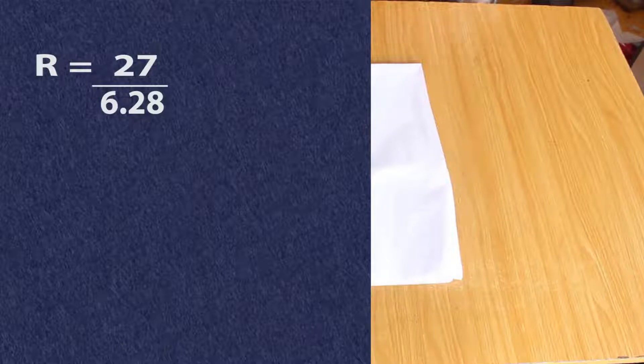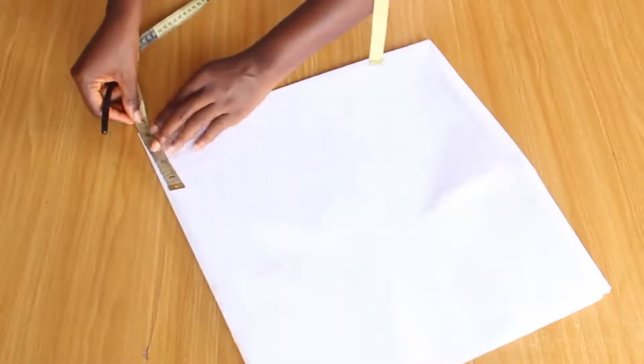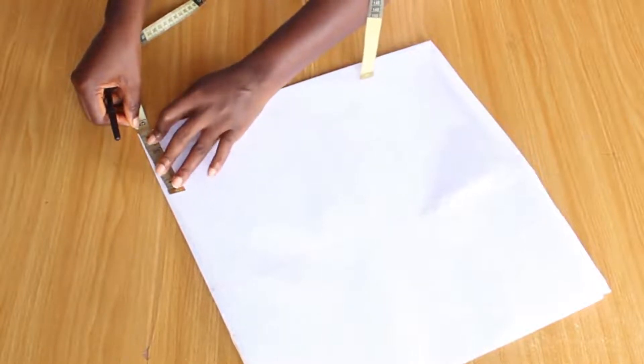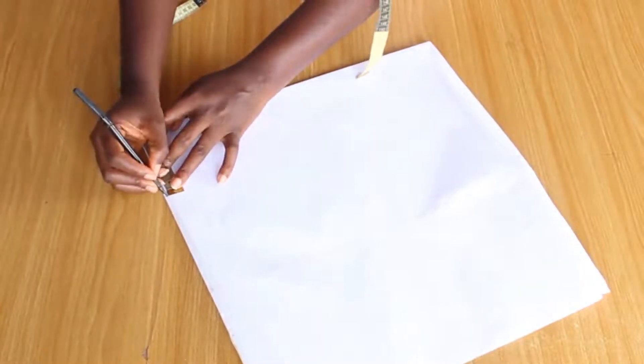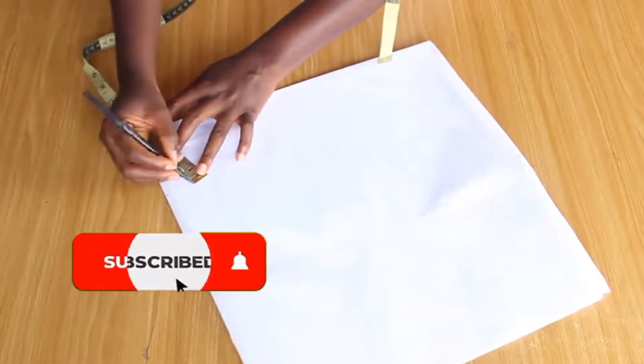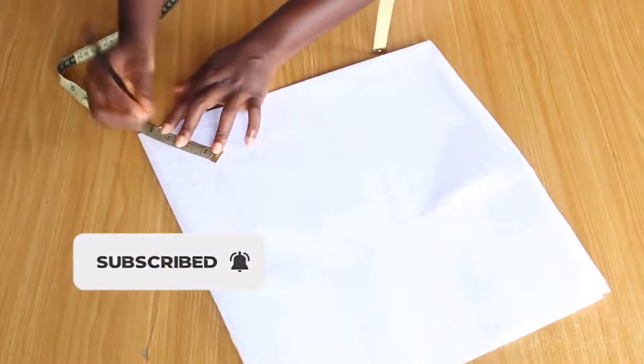From this tip right here, I'm going to measure 4.3. I'll keep this at this point and keep rotating while I mark my 4.3. I'll do this until I rotate to the other end of this pattern paper.